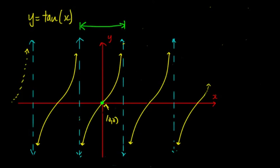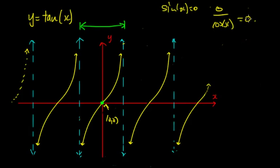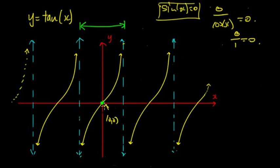We begin at (0, 0). Why? Because when sin x = 0, tan x = sin x / cos x = 0 / cos x = 0. Sin x and cos x are never both zero at the same points, so for x = 0 we get 0/1 = 0. Whenever sin x = 0, tan x = 0. So we have (0, 0) here, then (π, 0), because that's when sin x = 0 again, and then (2π, 0), and so on.